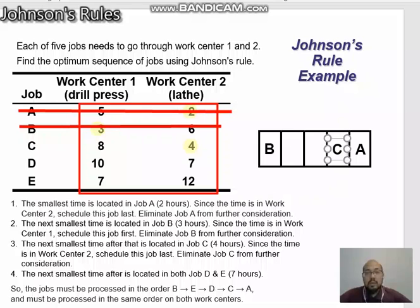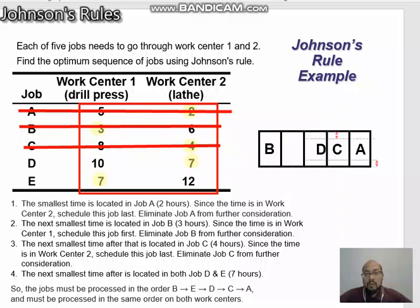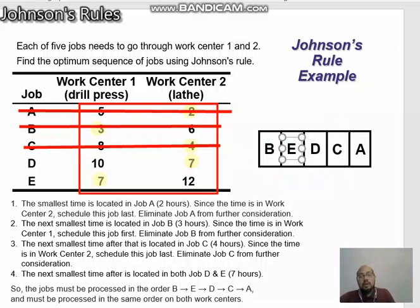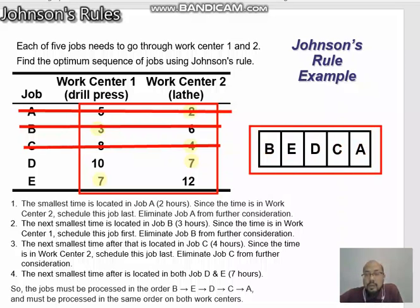Next, we eliminate C. Now we are left with seven hours for job D located at work center two and seven hours for job E located at work center one. Since job D's seven hours is at work center two, we schedule job D last. Job E's seven hours is at work center one, so we schedule job E first.